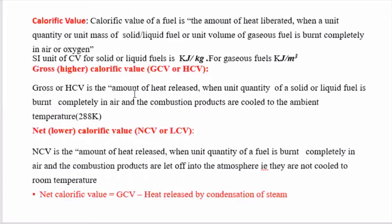Gross calorific value is the amount of heat released when a unit quantity of solid or liquid fuel is burnt completely in air and the combustion products are cooled to ambient temperature, that is 288 K. Cooling the combustion products means: the combustion releases heat and the products include carbon dioxide and water. Water is released as steam, and when that steam is condensed into liquid water, it releases additional heat energy. In gross calorific value, the heat released by condensation of steam is also taken into consideration.